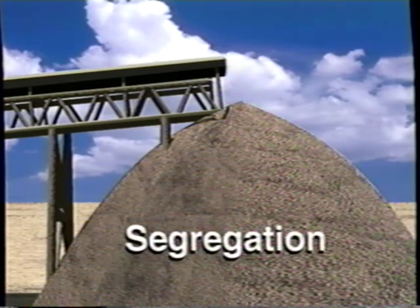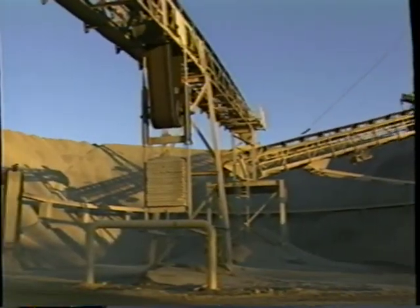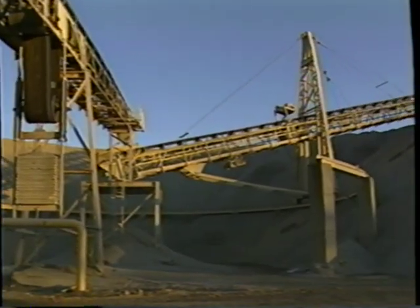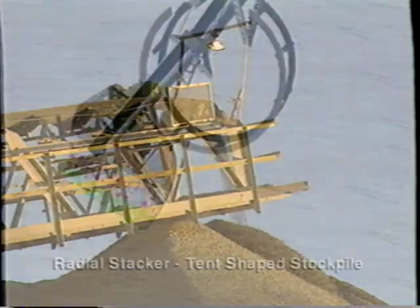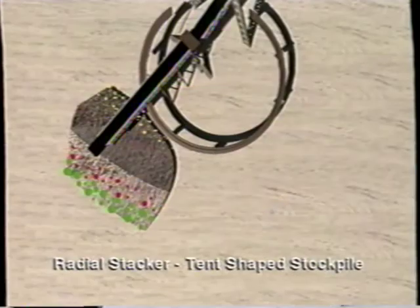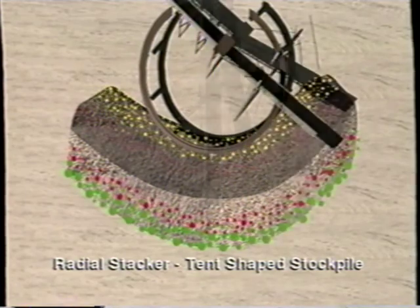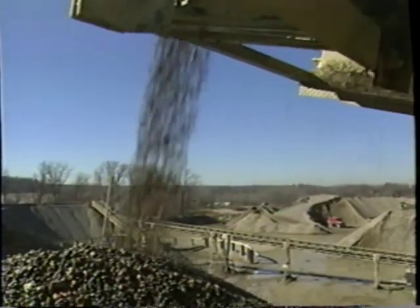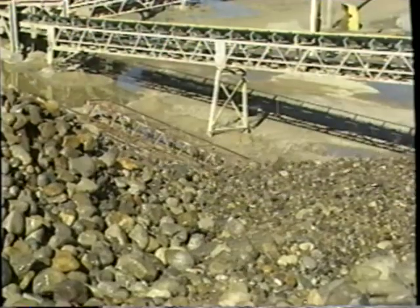The result? Segregation. A stockpile that is created from a radial stacker has similar segregation. Even though the conveyor moves, creating a more tent-shaped stockpile, fines tend to fall to the inside, while larger particles fall to the outside and away from the stacker.